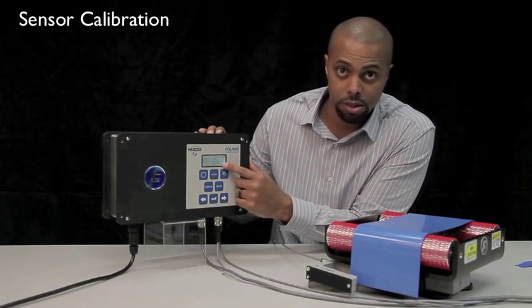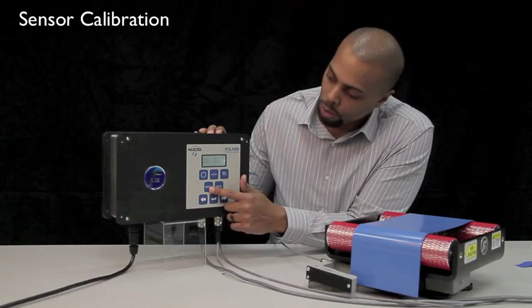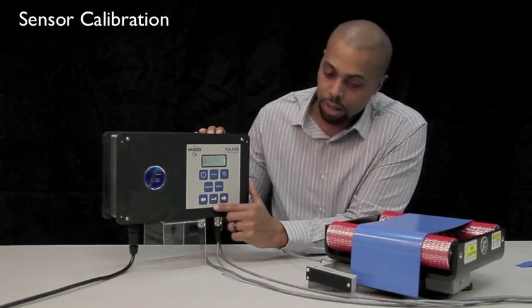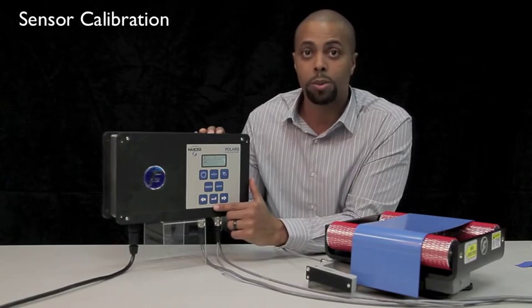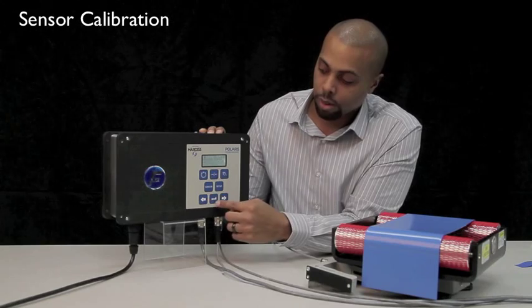Verify you have the correct sensor selected. If you need to change the sensor, press your sensor button. Once you have the correct sensor selected, press enter. At this time, verify there's no material in your sensor and press enter.